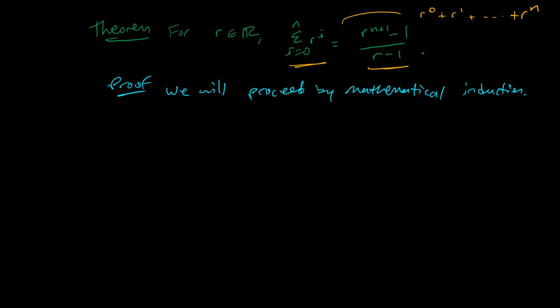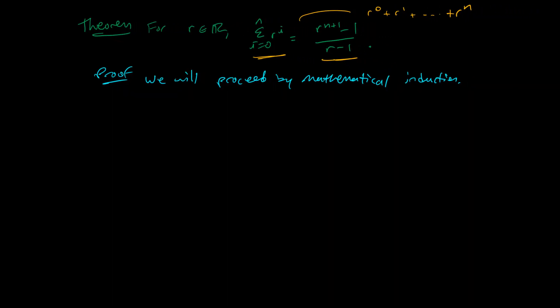We start off by saying we will proceed by mathematical induction. From there, we need our base case. The base case would be the first instance. So my first instance is if, well, it looks like we're starting with i equals 0. We need to show that this is true when n is 0. So if n equals 0, then this summation is just r to the 0.